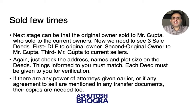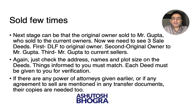The first sale deed is when DLF sold to the original owner; the second is from the original owner to Mr. Gupta; the third is Mr. Gupta selling to Mr. Arona. He would give you copies of these three sale deeds and any other documents in between. You can study them: check address, name, plot size — all of that should be there. There could also be a power of attorney if one of the owners was not available in India and gave authority to a family member to sign on his behalf.